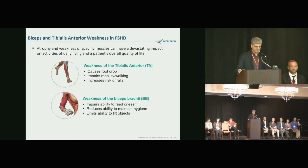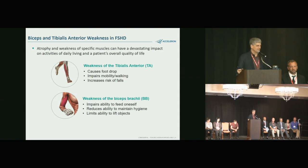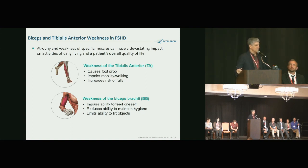They selected specific muscles to target, based on an FSH Society survey about which muscles matter most in daily life, and patient focus groups. They identified muscles in the upper arm and lower leg — treating the tibialis anterior to address foot drop and reduce fall risk, and the biceps to help with arm-to-body movements. These are proof-of-concept muscles, with other muscles potentially targeted in the future.